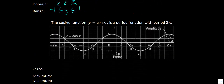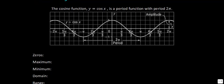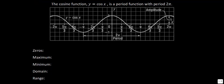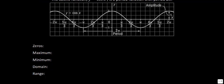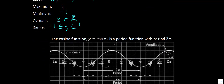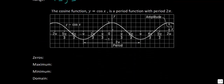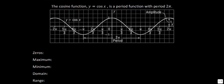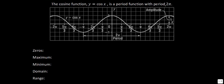Now let's look at how the sine graph relates to the cosine graph — they're very similar. One subtle difference is that sine goes through the point (0, 0), whereas cosine goes through the point (0, 1). Otherwise, they're rather similar, and cosine also has a period of 2π, just like the sine graph.